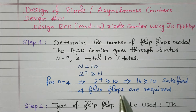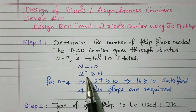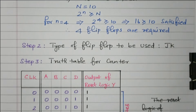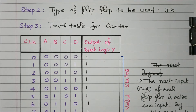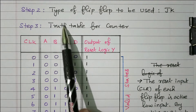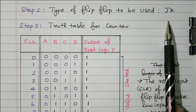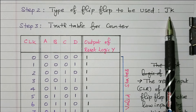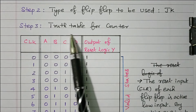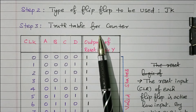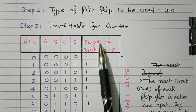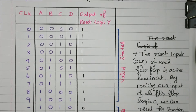First step summary: we need to find the number of flip-flops, identified from the condition 2^n ≥ N — 4 flip-flops are needed. The second step is the type of flip-flop. In this problem it is clearly given: JK flip-flop. If it is not given in the problem, we can decide according to our choice, but here it is clearly given as JK flip-flop. Now we need to go for the truth table for the mod-10 counter.